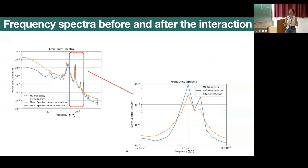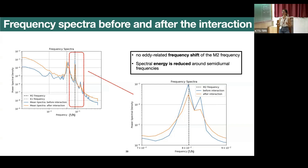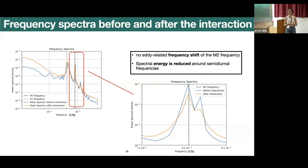Here we see frequency spectra before and after the interaction, zoomed in around the M2 frequency. Before the interaction is shown in blue and afterwards in orange. We can see that the spectral energy is reduced around the semi-diurnal frequencies — not only at M2 but also at S2 — which is an indication of weakening of the internal tide due to the interaction. Also notable: there is no eddy-related frequency shift of the M2 peak at the frequency resolution we can achieve, which is about one over one hour.